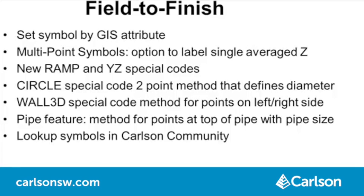The circle special code has a new two-point method that defines the perimeter like SUR-CE does. The wall3D special code has new controls for running the wall points on the left or right side as well as the center. The pipe feature has a new method to locate the points at the top of the pipe and supply the pipe size and thickness. For finding custom FieldToFinish symbols, the program now checks for new symbols in Carlson Community.